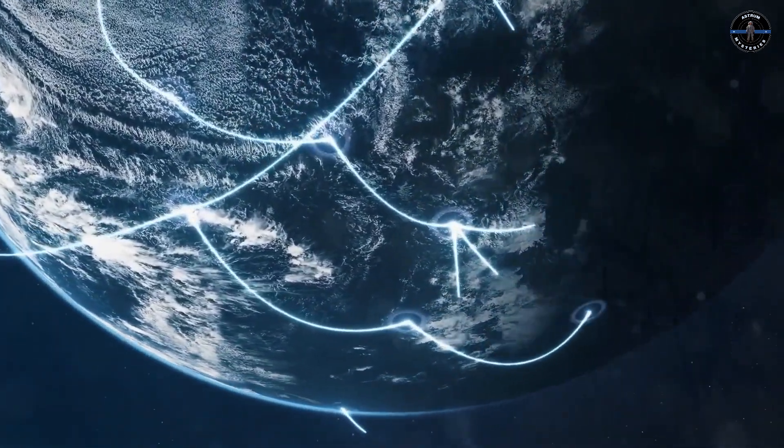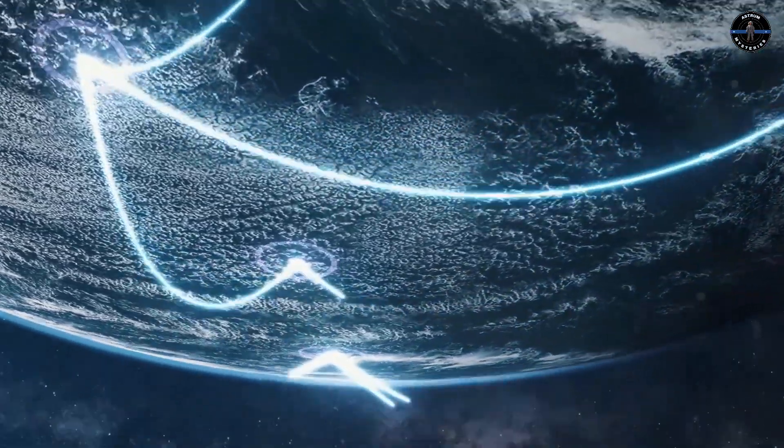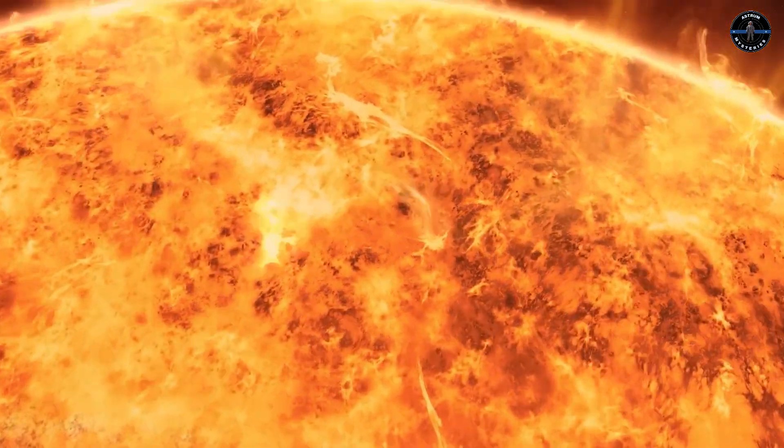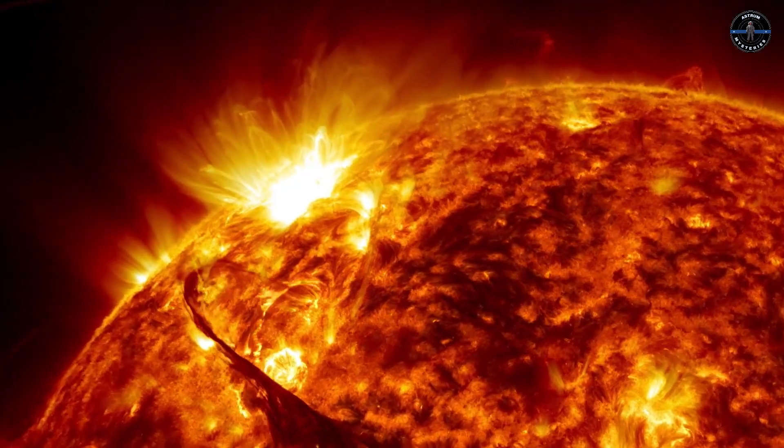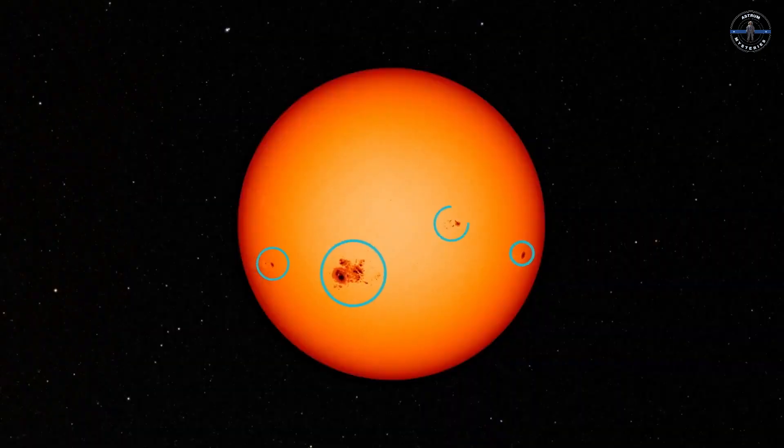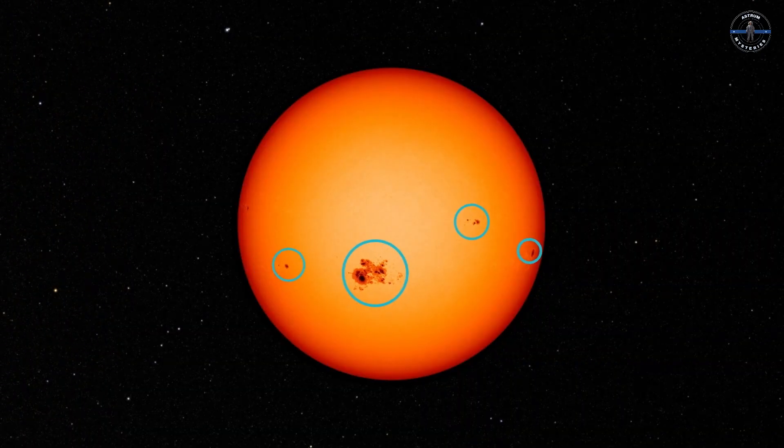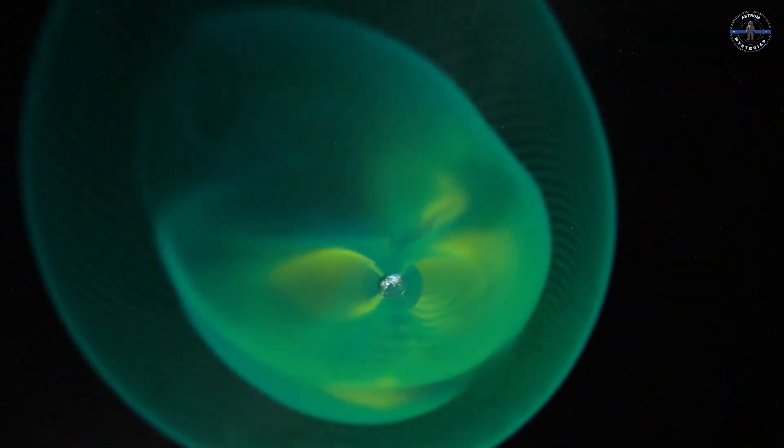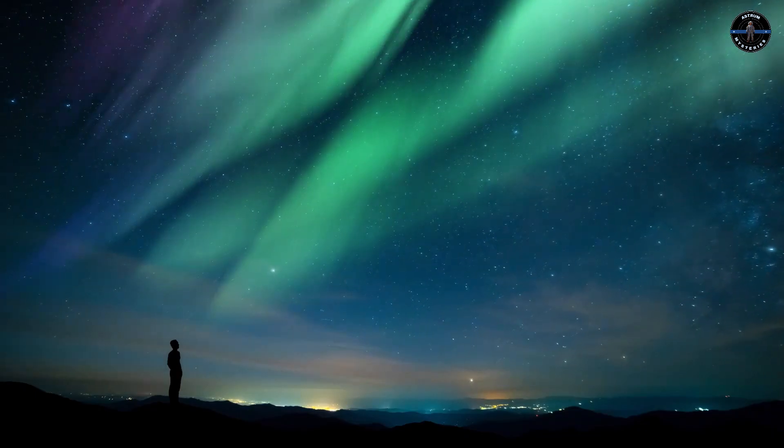2024 has been one of the wildest years for solar activity. In May alone, we witnessed over 80 solar flares, with nine of them being the most powerful X-class flares, the Sun's version of a supernova-level punch. These flares sparked some of the strongest geomagnetic storms in two decades, lighting up the night sky with dazzling auroras seen as far south as Texas and Spain.